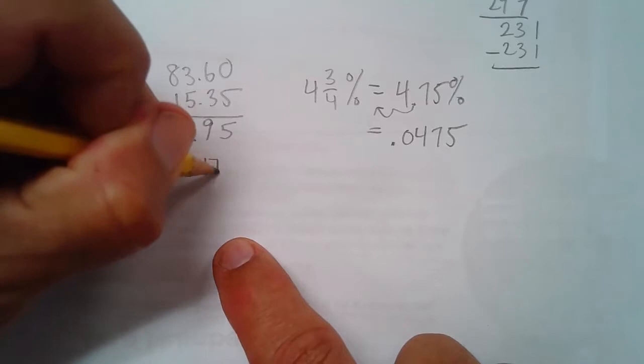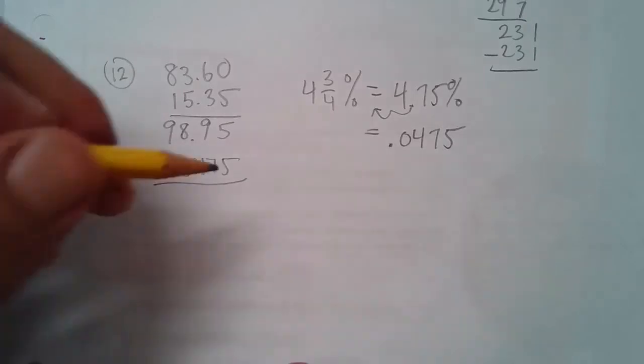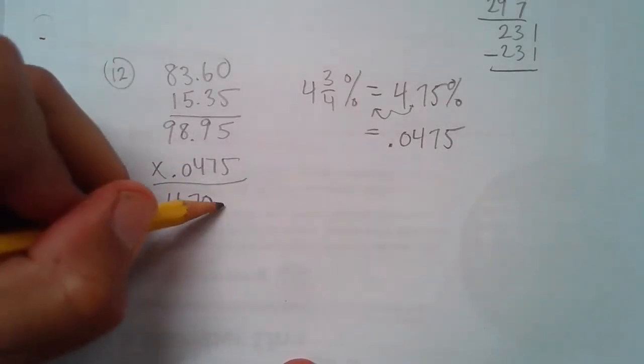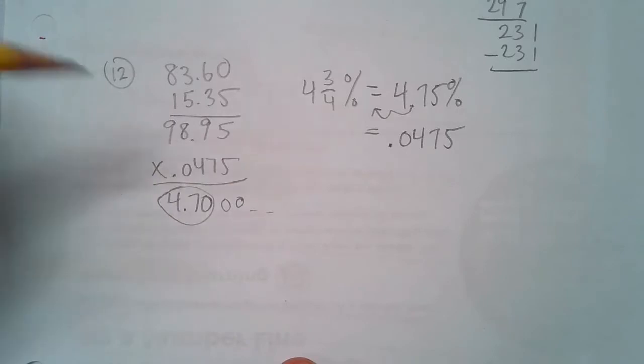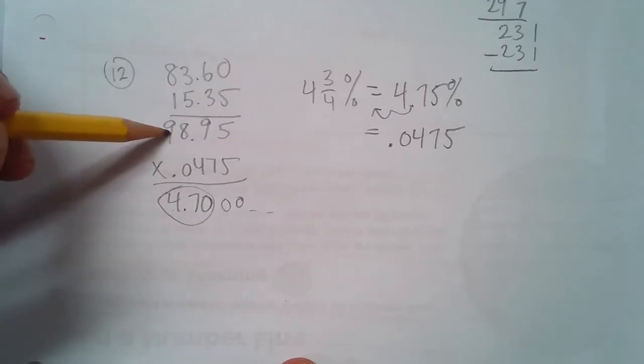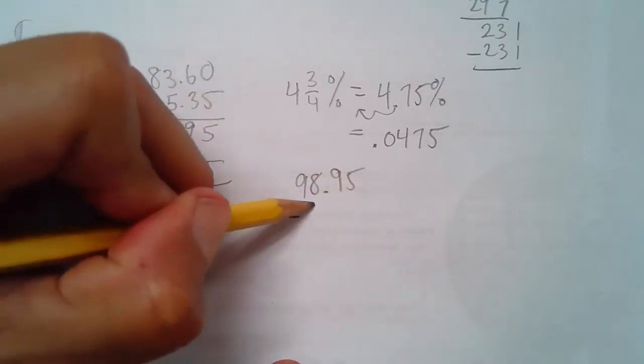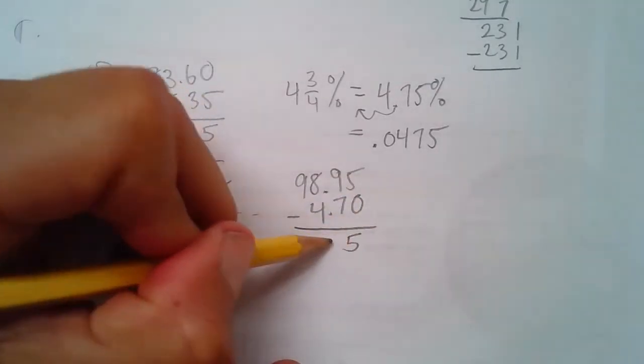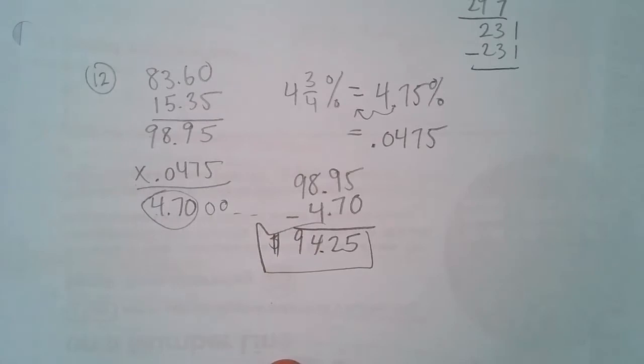We have to drop this by that percent. We have to take 4.75% of that. Which means we have to multiply this times 0.0475. Now I did this, and I figured this would take me a while. If you do it, you should pause and make sure that you get the same that I do. You get 4.70. This is how much we have to drop it by. This is 4.75% of $98.95. So when I take $98.95 minus $4.70, that ends up being $94.25. That's how much the stock is worth now.